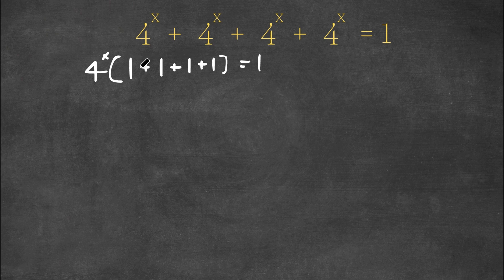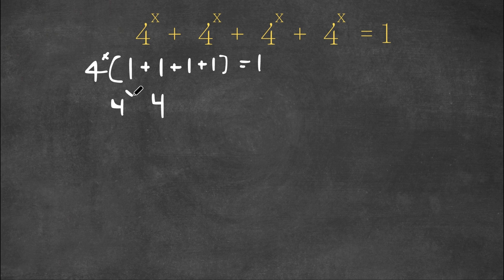Now, 1 plus 1 plus 1 plus 1 equals 4. So now we have 4 to the power of x times 4 is equal to 1.